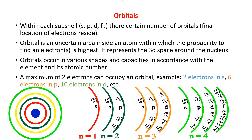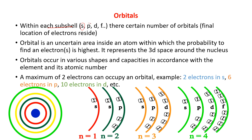Now what is meant by orbital? Each and every subshell has orbitals. An orbital is an uncertain area inside an atom within which the probability of finding electrons is highest — you can find the electrons in these regions only. It represents the three-dimensional space around the nucleus, meaning electrons can move in all directions: up, down, left, right, front, back, and so on. Within each subshell — s, p, d, and f — there are a certain number of orbitals, and orbitals occur in various shapes depending on the element and its atomic number.